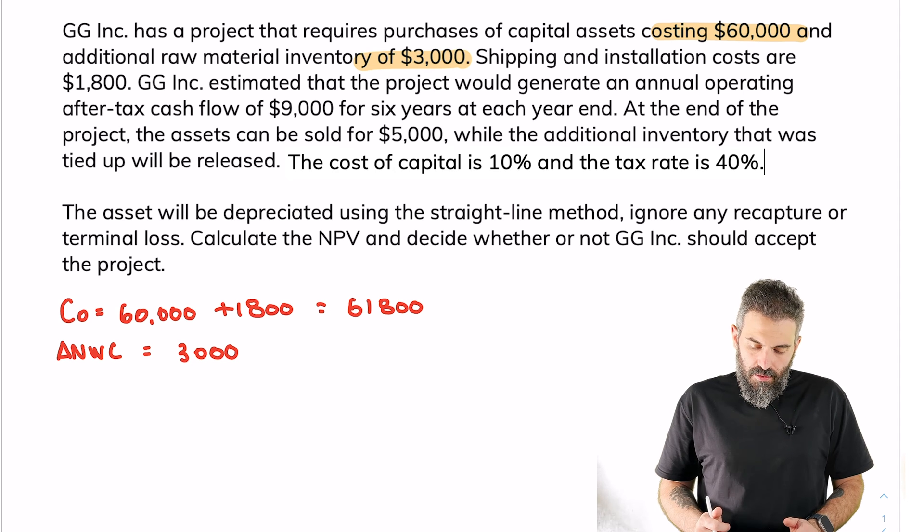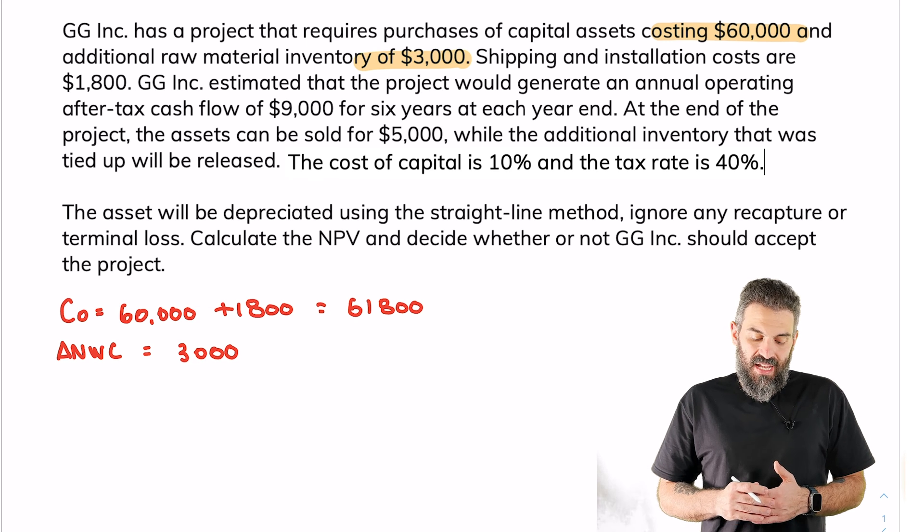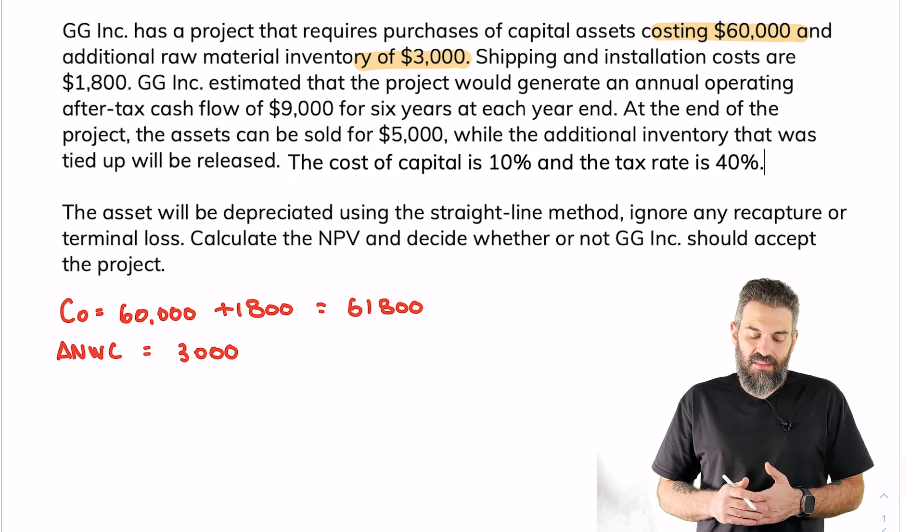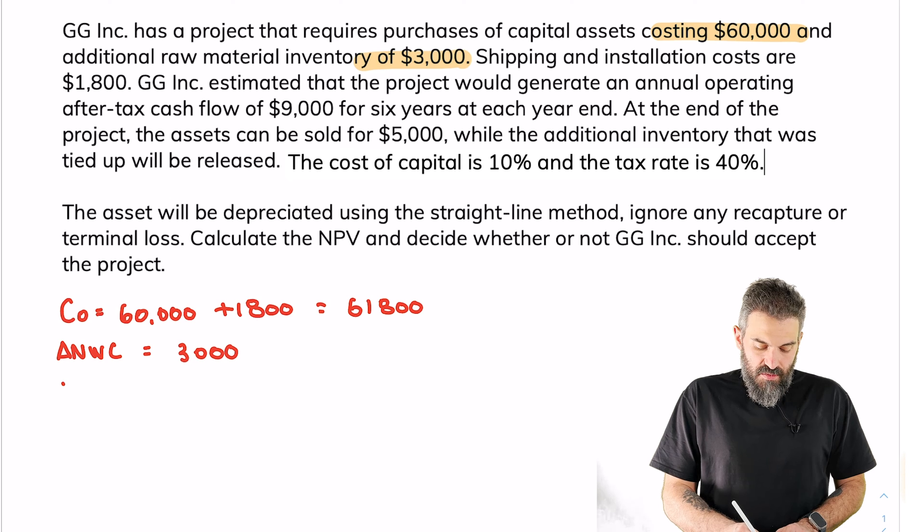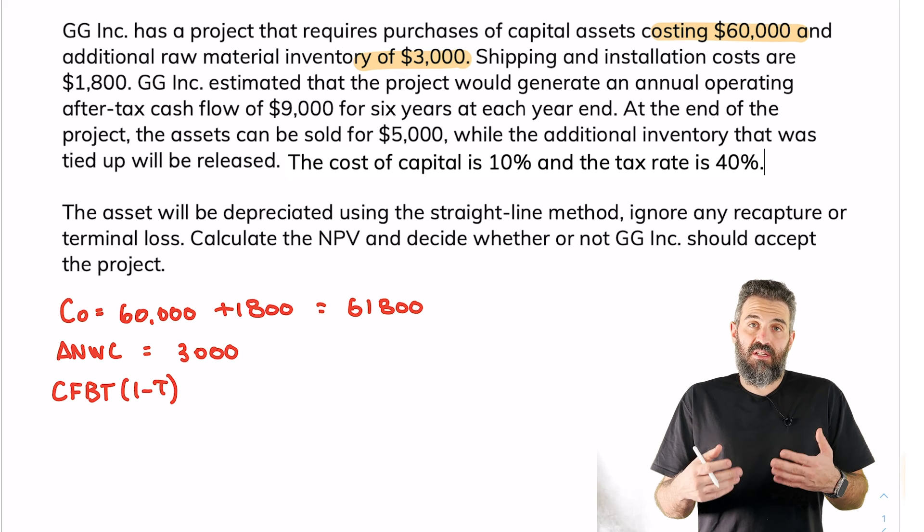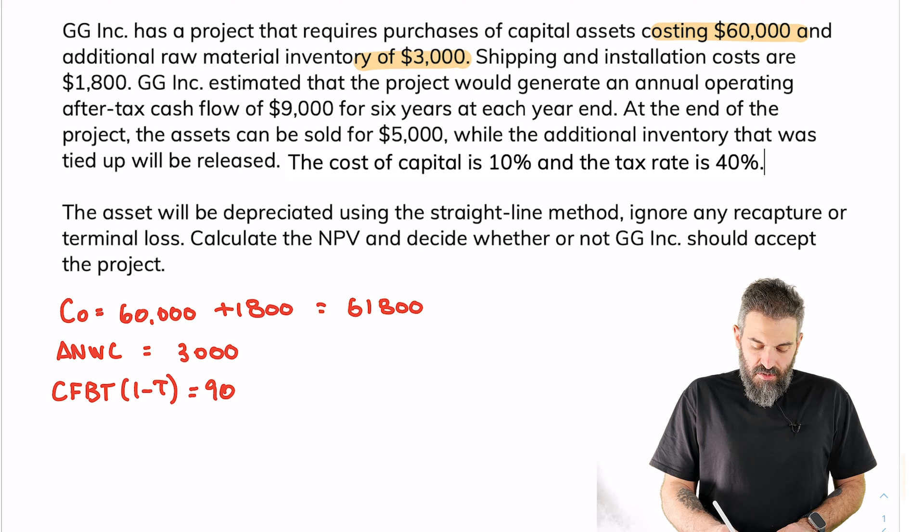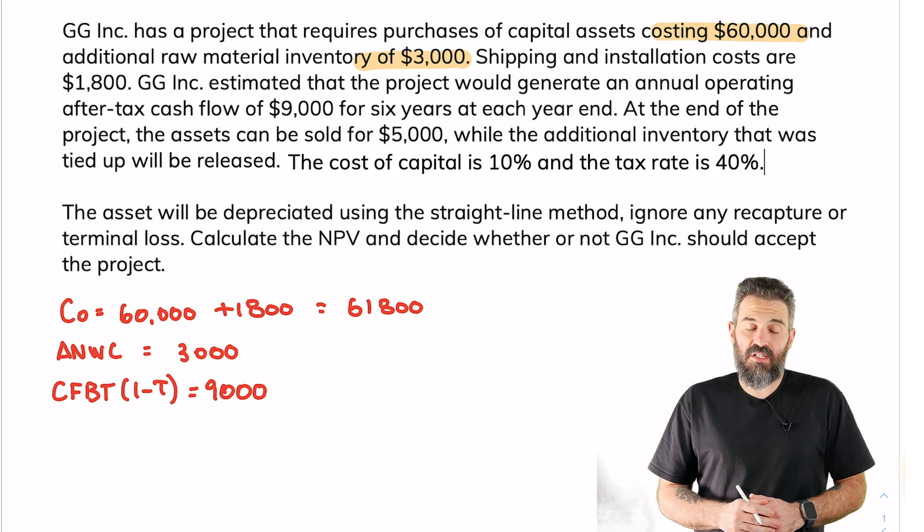It's estimated that the project would generate after-tax cash flows of $9,000 for six years. So that means your CFBT times one minus tax. The cash flows after tax are $9,000 every year for six years.